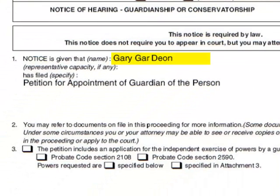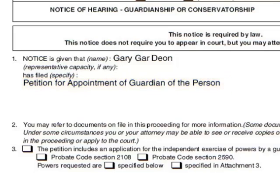In Paragraph 1, after the words "Notice is given that," write the name or names that you wrote in the caption at the top of the page. Skip over the line that says Representative Capacity, if any, and then after "Has filed," write "Petition for Appointment of Guardian of the Person," as shown on the screen. This alerts the court and relatives to know that you have filed a form called Petition for Appointment of Guardian of the Person with the Probate Court.